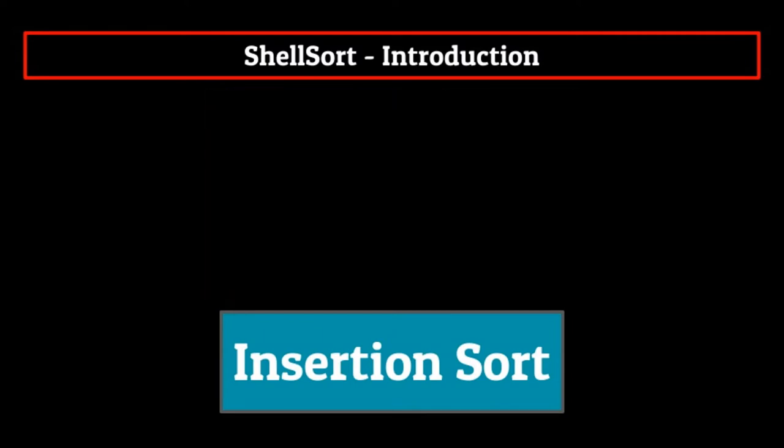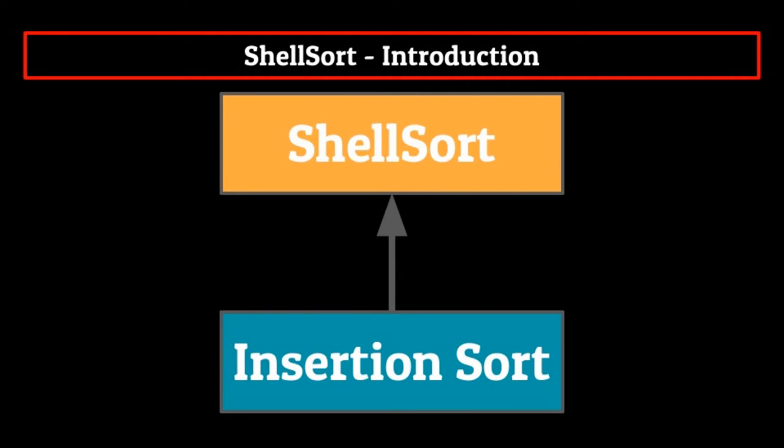So if the major downfall of insertion sort was that we only moved elements one position at a time, what would be a good solution to this problem? Well, the answer as you might have guessed comes in the form of shell sort. The main idea behind shell sort is allowing the exchange of far items. Imagine that same scenario as before — only now we can simply exchange the large element on the right side of the list with one of the much lower elements. This would speed things up tremendously. How we actually do this is going to be a little bit more complicated than that, but before we hop directly into pseudocode, let's get down to a formal definition.